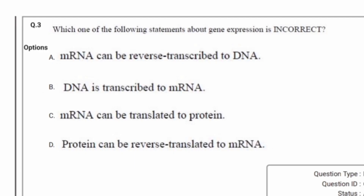Here we find that in this question: which one of the following statements about gene expression is incorrect? We need to find the incorrect option. Option A: mRNA can be reverse transcribed to DNA. Option B: DNA is transcribed to mRNA. Option C: mRNA can be translated to protein. Option D: protein can be reverse translated to mRNA. The correct answer is option D, because protein cannot be reverse translated to mRNA — this is incorrect.